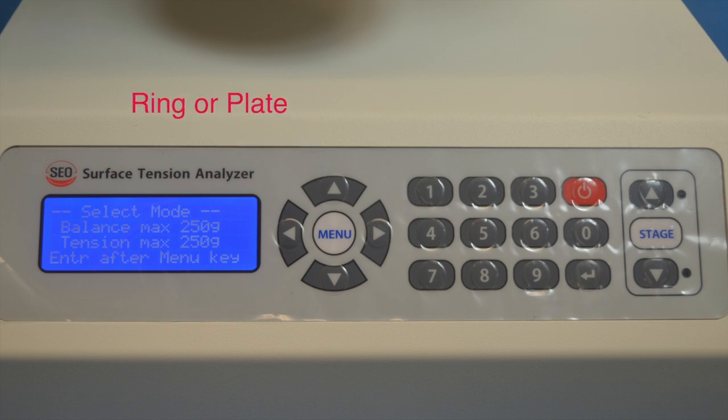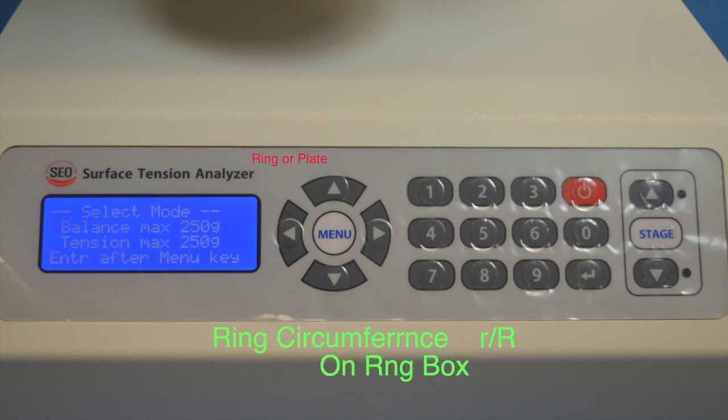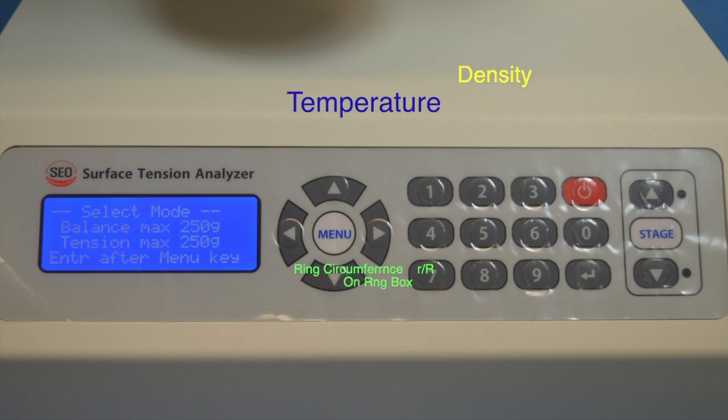The test parameters are ring or plate, the ring circumference on the ring box, the density of the product, and the temperature of the product.